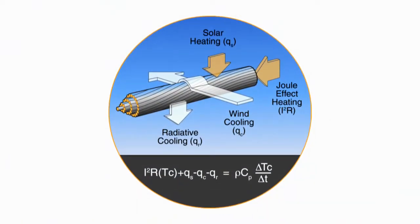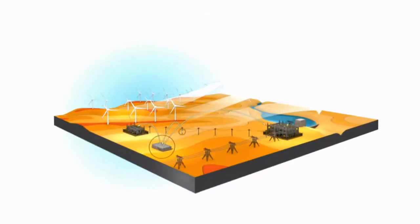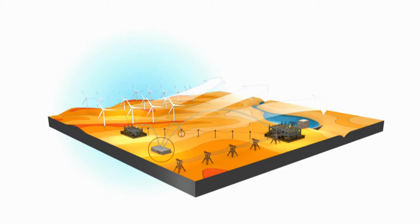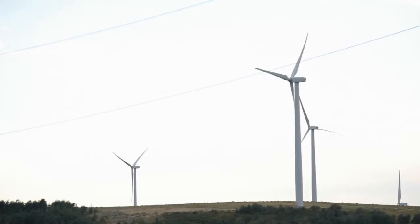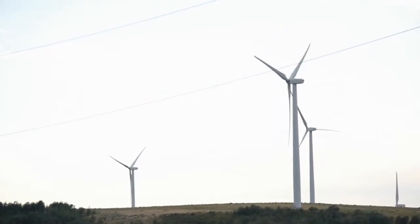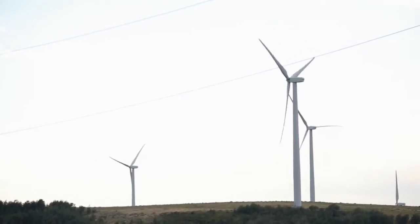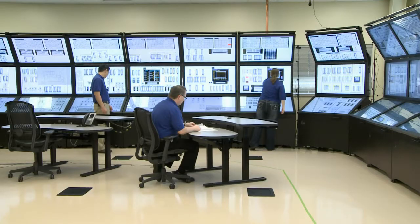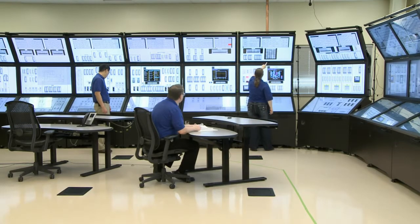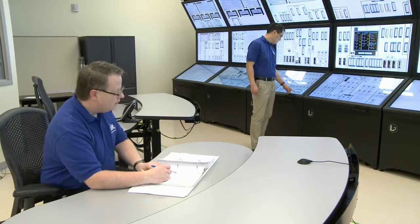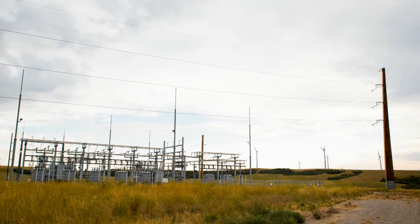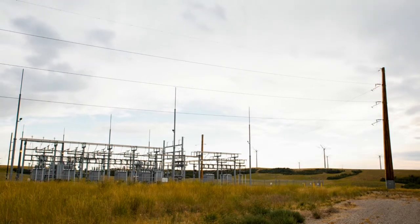Traditionally, the amount of power transmitted through lines is bounded by static limits set with conservative weather assumptions. Yet varying environmental factors can change the amount of cooling on power lines and allow for increased current loads. In fact, lines near wind farms are ideally suited to handle extra electricity generated on windy days. Utility operators could safely maximize the amount of electricity flowing through a grid network if they had access to reliable, real-time information about weather and other conditions along the transmission lines.